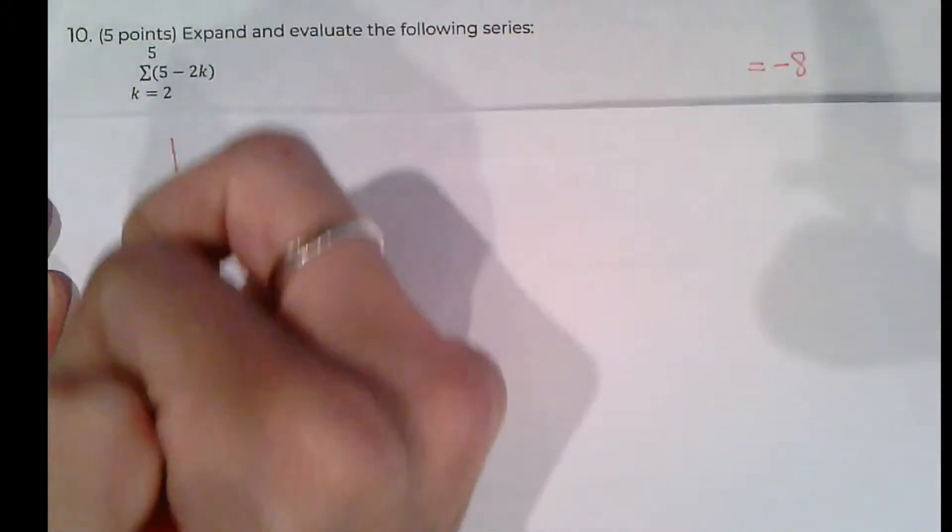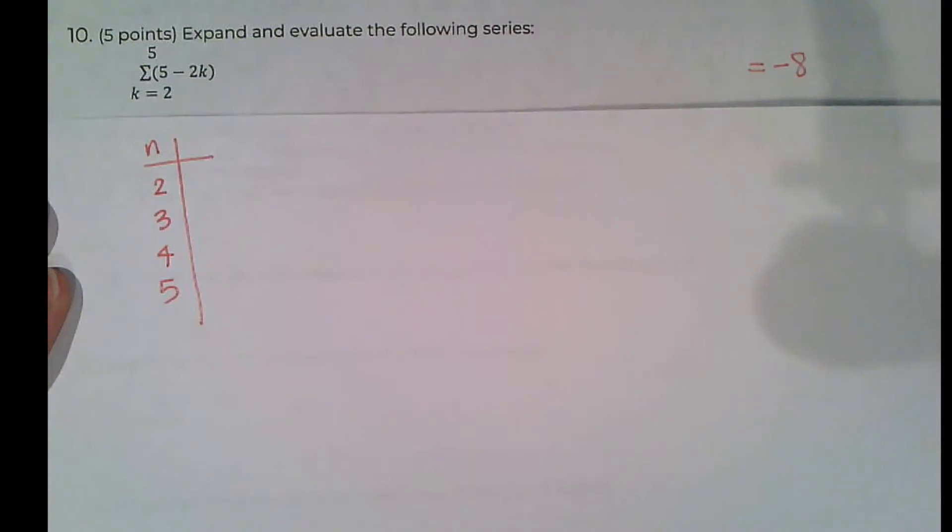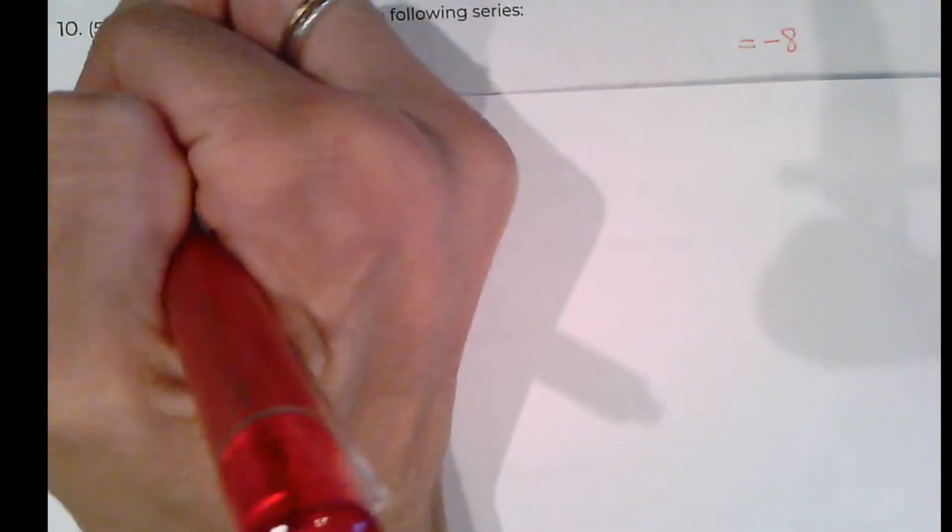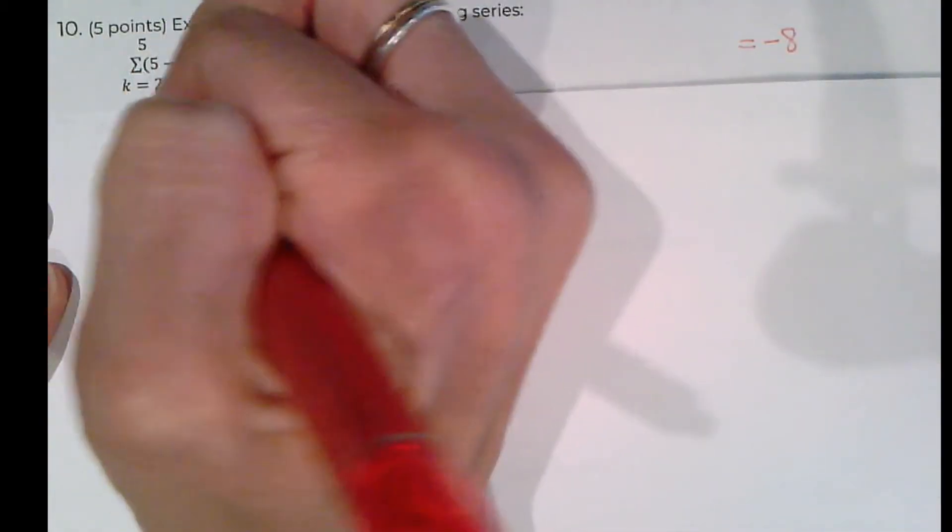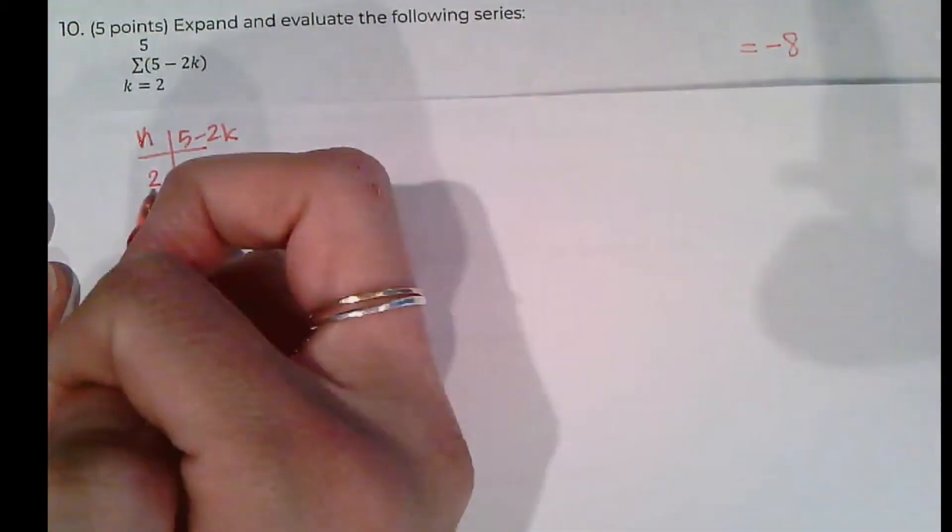So one way, I didn't do this in class, but I saw it when I subbed for someone yesterday, is we know we want to go from 2 all the way to 5, right? And I guess we'll call these k's instead of n's. And we need to sum up the rule 5 minus 2k, so we're just going to plug in 2 into that thing.